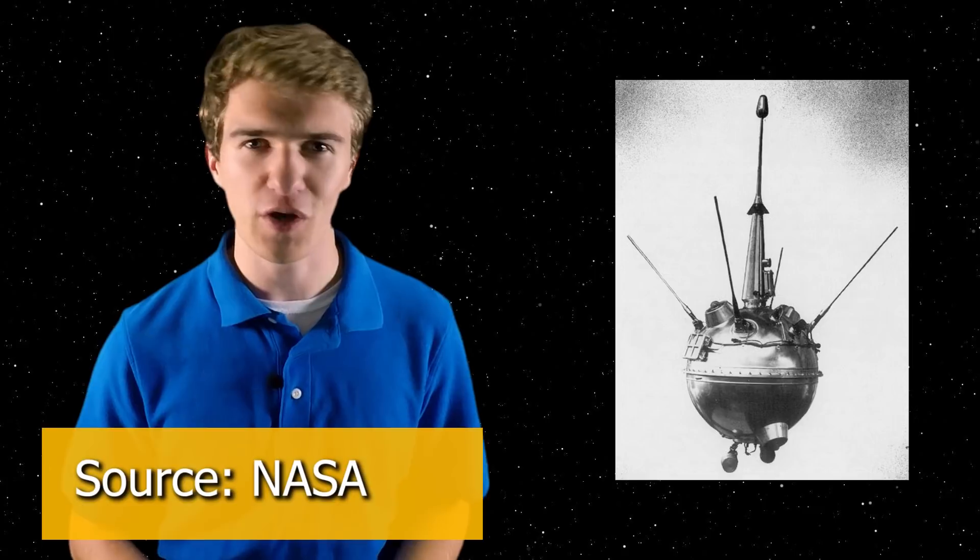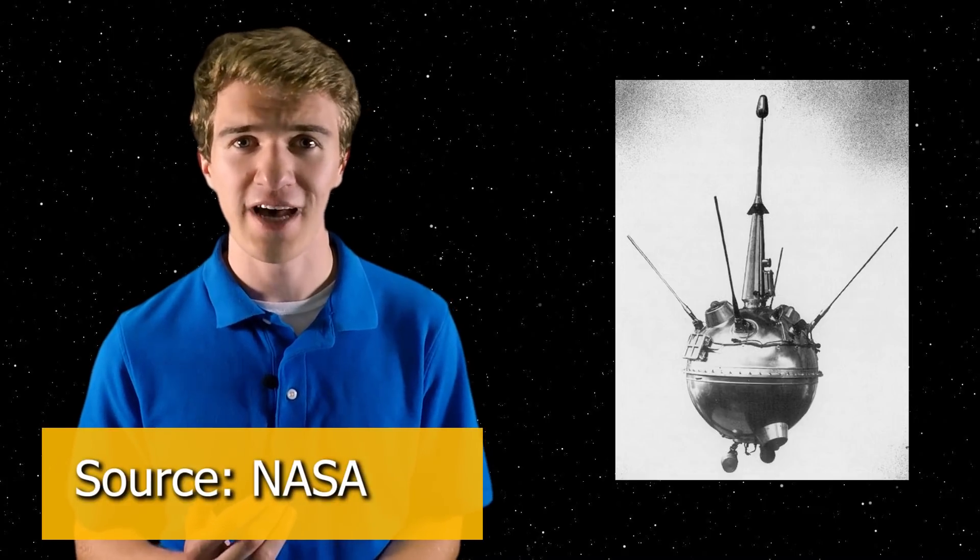In May of 1961, there was now political backing to land astronauts on the surface of the moon by the end of the decade. And this is because they saw that as the only way they could truly beat the Soviet Union in the space race. But the better question is, how did NASA go from being so far behind the Soviet Union in terms of launch capabilities and technological spacecraft capabilities to eventually landing people on the surface of the moon?